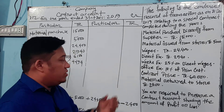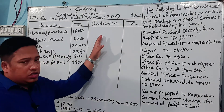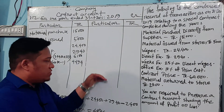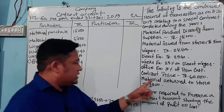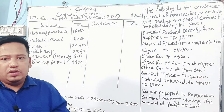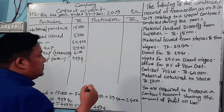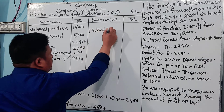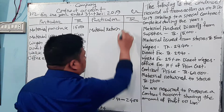Contract price is shown on the credit side. The first part is the cost of work completed (CD). The second part is the contract price. Material return to store is 2,400, which is entered on the credit side.